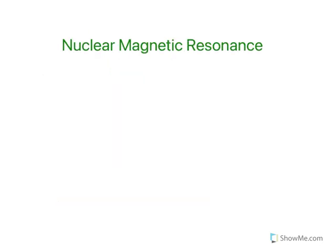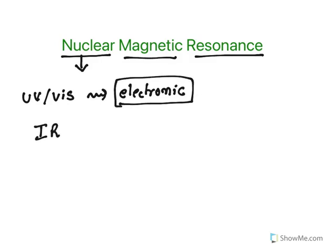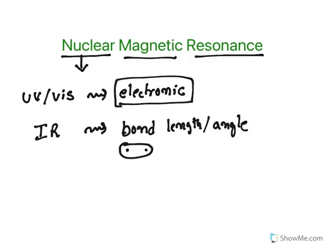NMR means Nuclear Magnetic Resonance. Let me explain the individual terms and then explain how they relate to the NMR technique. This technique is related to the nucleus — it is not related to electrons. In UV and visible spectroscopy, the spectra arise from electronic transitions. In infrared spectroscopy, IR radiation causes changes in bond length and bond angle, which involve electrons. Whereas in NMR, it deals with the nucleus.